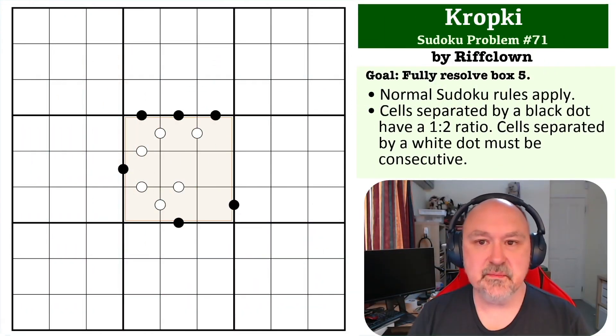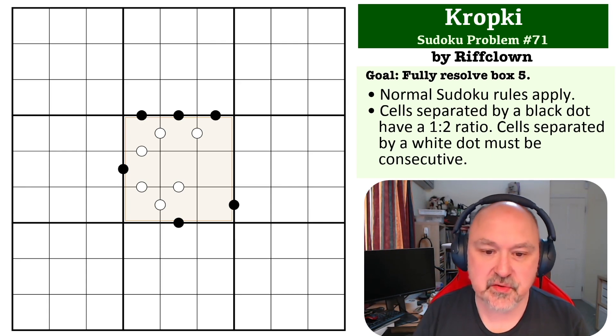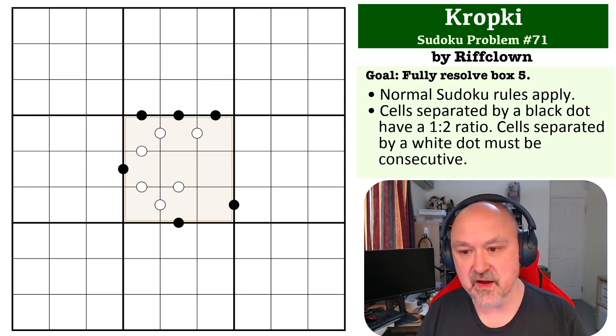Hey, this is Bremster and this is number 71 in my Sudoku problem series. This is a Kropki problem by Riff Clown. This one has been rated medium by the testers, so the goal on this one is to fully resolve box five. There is a link to the problem below where you can try this one out for yourself.